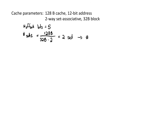This leads us to the fact that we're going to have log base two of two, or one index (set) bit. And then finally, for the number of tag bits, this is everything that remains, so this would be 12 minus 5 minus 1, giving us six tag bits.